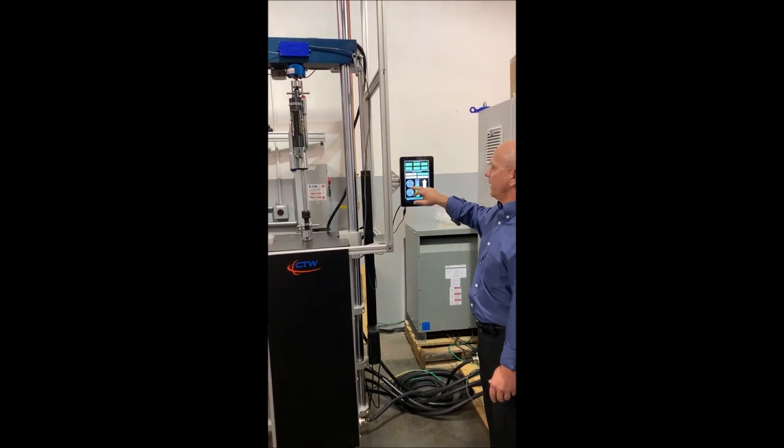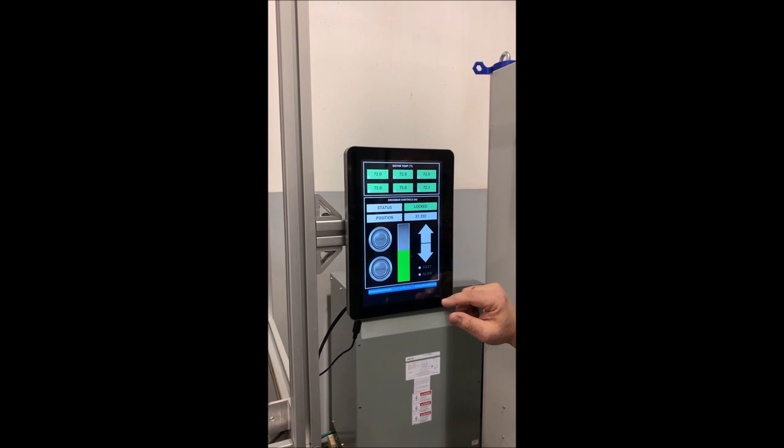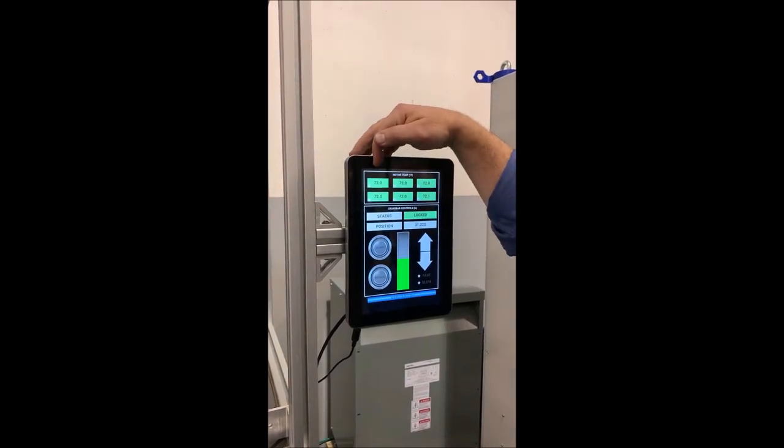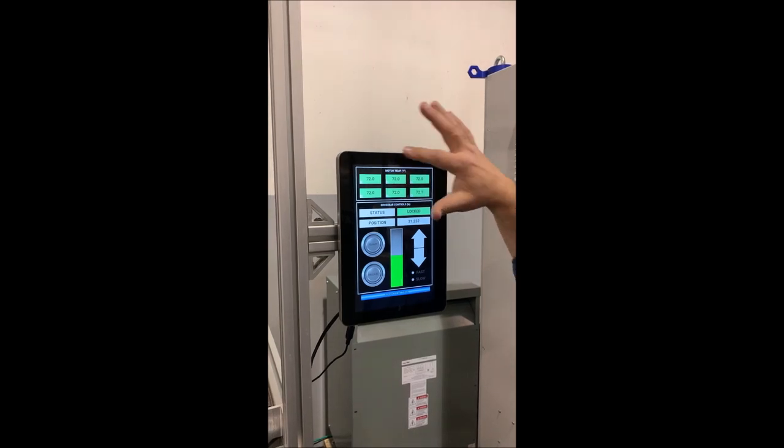So you have full clamp and release. You have up and down and you have two speeds to use. So first this machine has six motors and we're monitoring the temperature and all the motors through the screen.